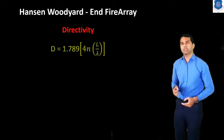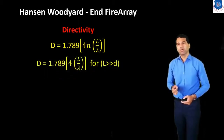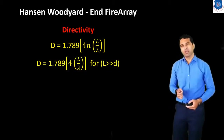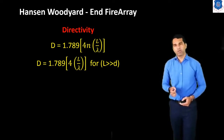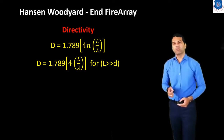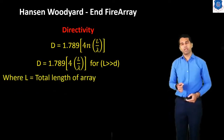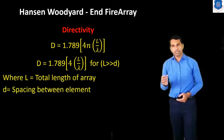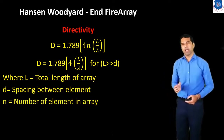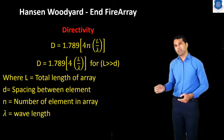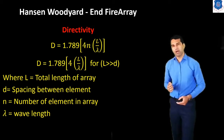Now we discuss the directivity. The equation for the Hansen-Woodyard Endfire Array directivity is D equals 1.7894·N·L over lambda. In the case where L is very large compared to d, we can write D equals 1.7894·N·d over lambda. Here L is the total length of the array, d is the spacing between elements, N is the number of elements, and lambda is the wavelength.